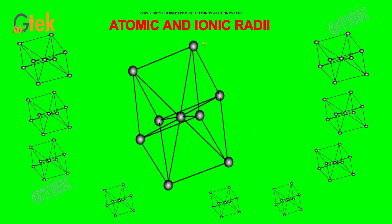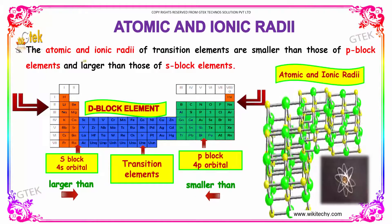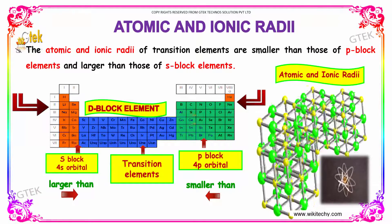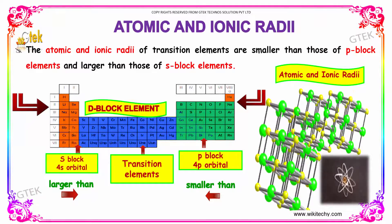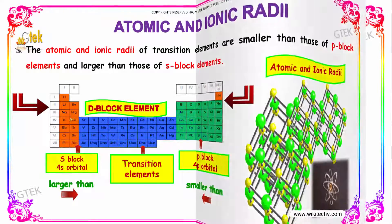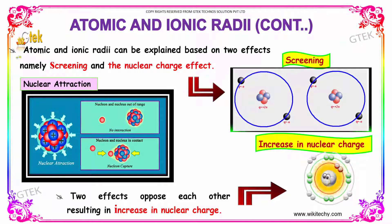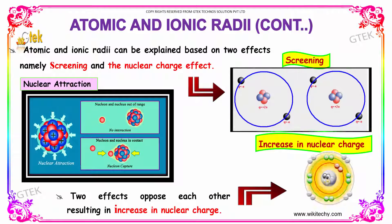Here is the atomic and ionic radii. The atomic and ionic radii of transition elements are smaller than those of the P-block elements and larger than that of the S-block elements. Atomic and ionic radii can be explained based on two effects: the screening effect and the increase in the nuclear charge effect. These two effects oppose each other, resulting in an increase in nuclear charge.